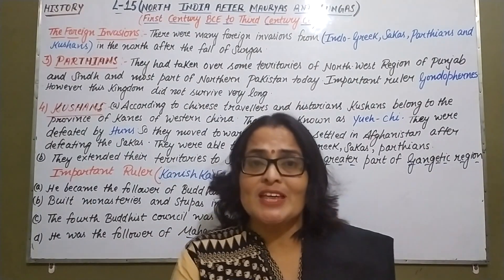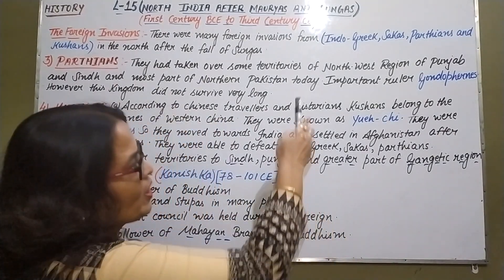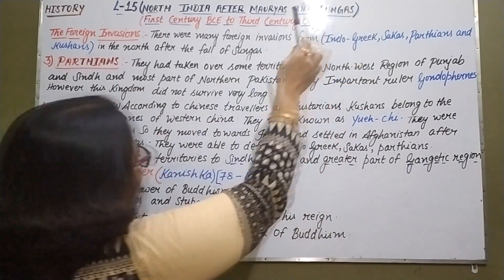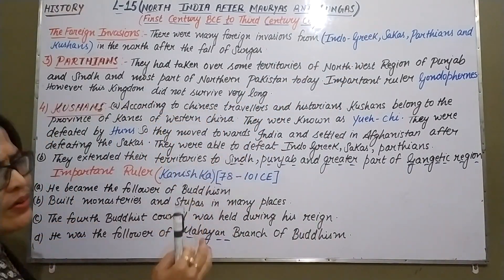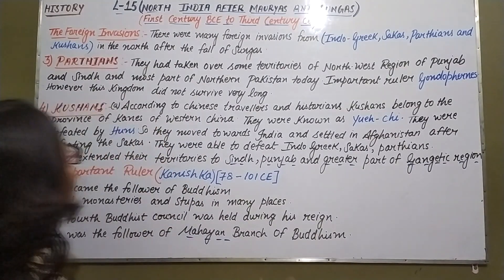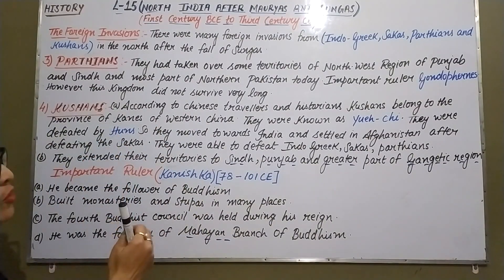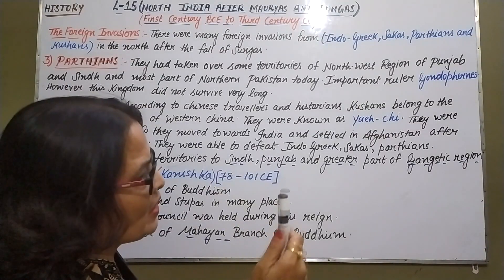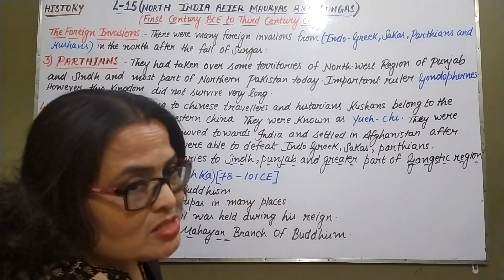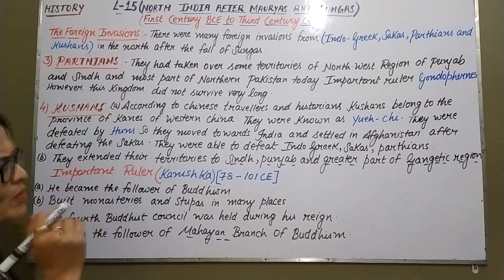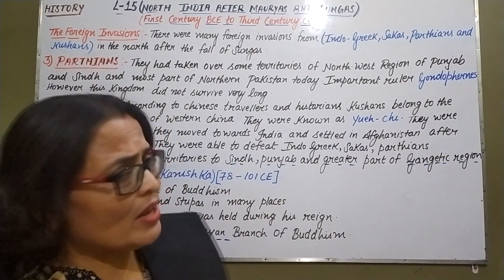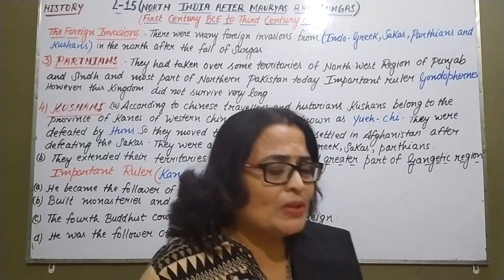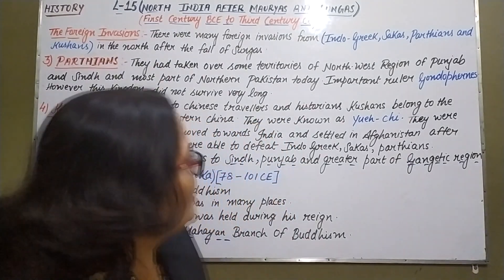Now about the Parthians. The Parthians took over some territories of the northwest region — Punjab, Sindh, and most of northern Pakistan today. The most important ruler of the Parthians was Gondophernes. However, this kingdom did not survive very long.